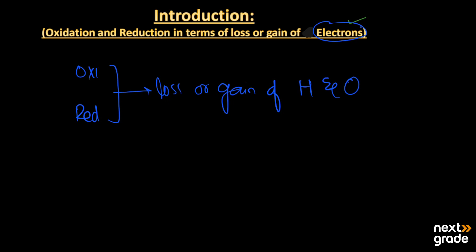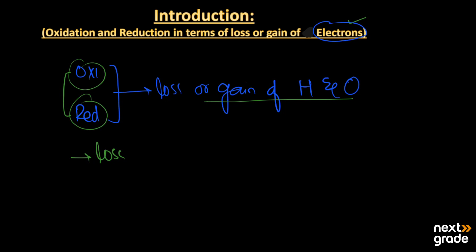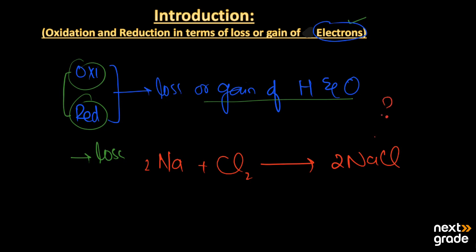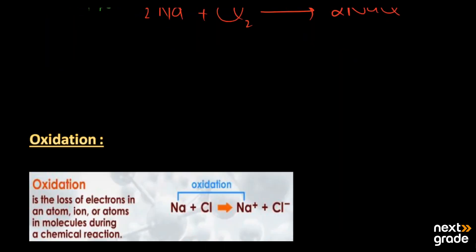The question arises: why is there a requirement for defining oxidation and reduction in terms of electrons? The simple answer is that many chemical reactions involve no loss or gain of hydrogen and oxygen. For example, the reaction of sodium plus chlorine forming sodium chloride has no oxygen or hydrogen present in the reactants or products. To resolve this problem, scientists work with loss or gain of electrons, because every chemical reaction involves the transfer of electrons.